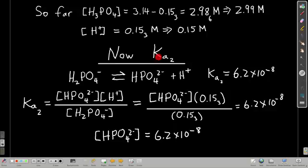So now what we do is we're going to find Ka, or use Ka2. And what we're going to do is we're going to find the equilibrium concentration of hydrogen phosphate.